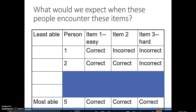Let's first review what we think this model is and how it should be working, to understand where it's going to fit or not fit. We have three items: one is easy, the third one is hard, and item two is in the middle. We have people with varying abilities from least able to most able. The most able gets all three correct. The least able gets only the easy item correct and misses the two hard items. A person with more ability gets two items correct, so those three fit our pattern perfectly.